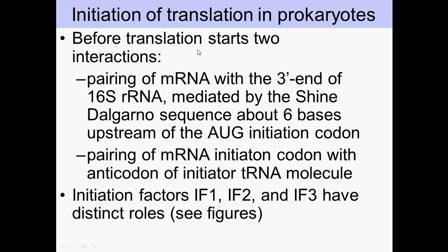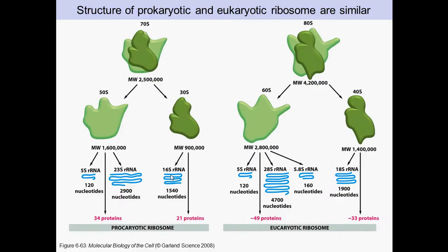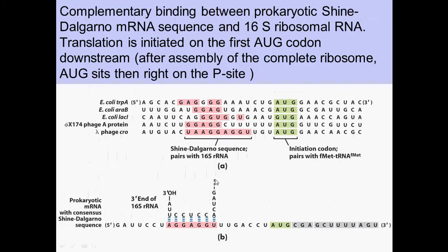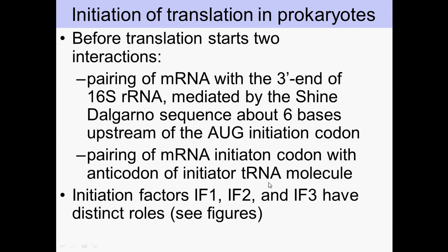Before translation starts, there have to be two interactions. First, the pairing of the mRNA with the 3' end of the 16S ribosomal RNA — the 16S RNA has to bind the Shine-Dalgarno sequence, which is about 6 bases upstream of the AUG start codon. Second, the mRNA initiation codon must pair with the anticodon of the tRNA that brings formyl-methionine, binding at the P-site.